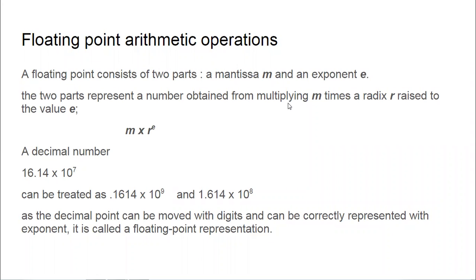In this video we are going to see about floating point arithmetic. A floating point number consists of two parts: one is a mantissa part and another is the radix and its exponent part. Radix is nothing but the base. If it is a binary number, the radix is two; if it is a decimal number, the radix is ten. R is the radix or base, and M is the mantissa part, which is the floating point value.